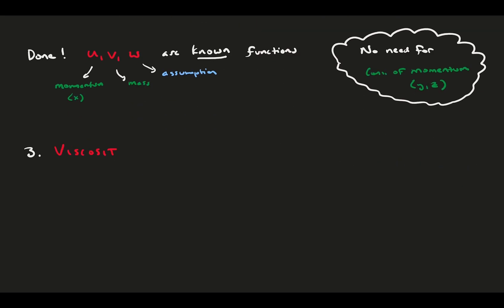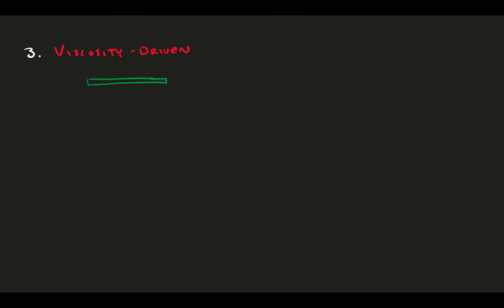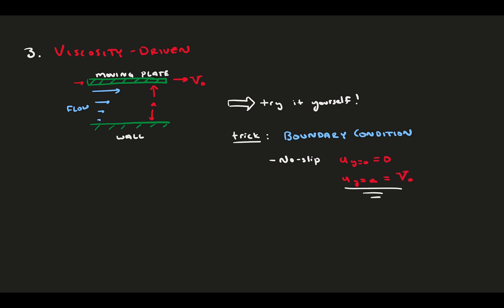And we move on to the last channel flow, viscosity-driven channel flow. We can sketch the flow. There is a stationary wall and a moving plate on top where the plate has a velocity in the horizontal direction, capital V sub zero. The plates are a distance a apart, and there is a flow being pulled along by the plate due to viscosity. I will leave this for you to try yourself at home. It's solved very similarly to the pressure-driven case. However, there is one small nuance. Up to this point, the u velocity on both walls has been zero as a boundary condition. However, for this case, u at y equals a is the plate velocity, V zero. So that's where it differs from pressure-driven channel flow. Give it a try and see for yourself and see how this changes the equations.